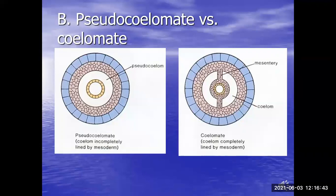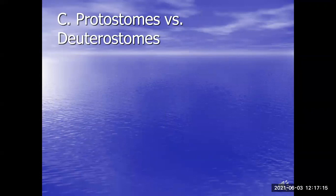Now, even within true coelomates, we can separate them into two different types: protostomes and deuterostomes. Protostome means the mouth comes first — 'proto' means first, 'stome' means mouth (like stomata on the bottom of a leaf). Deuterostome means second mouth — 'deutero' means second. So the mouth comes second. We are deuterostomes. During development our mouth forms not first but second. We're talking about the two holes of the digestive system.